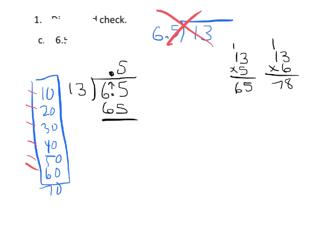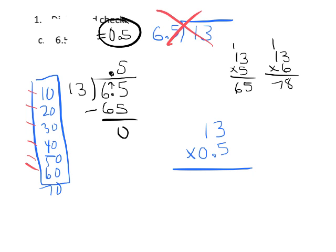The shortcut is to just say the decimal goes straight up, and that's true too. So we get 65, we subtract, we have no remainder, so our answer is 0.5 or 5 tenths. How do we check it? We multiply 13 times 0.5: 5 times 3 is 15, carry the 1; 5 times 1 is 5 plus 1 is 6. We have 1 decimal place, so the answer is 6.5, and that's exactly what we have here, so we're pretty sure we did it right.